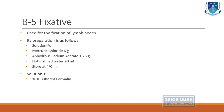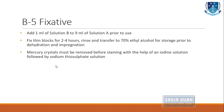B5 fixative is an important fixative used for the fixation of lymph nodes. Solution A contains mercuric chloride, sodium acetate, and hot distilled water, stored at 4°C. Solution B contains 10% buffered formal saline. Before use, 1 ml of 10% buffered formal saline is mixed with 9 ml of solution A. Tissue is fixed in thin blocks for 2–4 hours, then rinsed and transferred to 70% ethyl alcohol for storage before dehydration and processing.